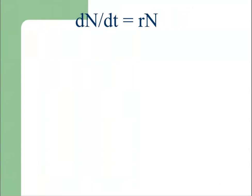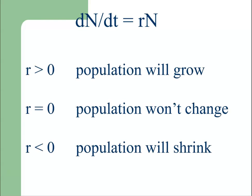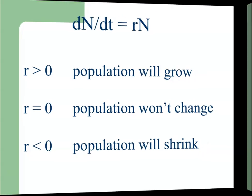We can also think of the change in population with respect to time, which equals r times N, where N is the size of the population and small r is the growth rate. If r is positive, the population will grow. If r equals zero, the population will be constant with no change. If r is negative, the population will shrink in size.